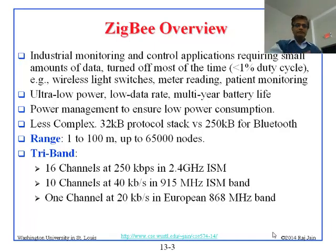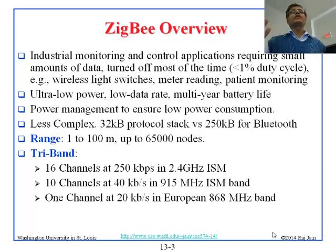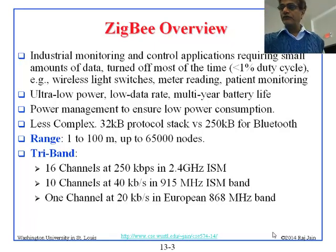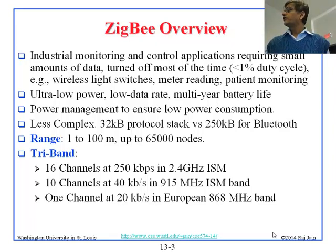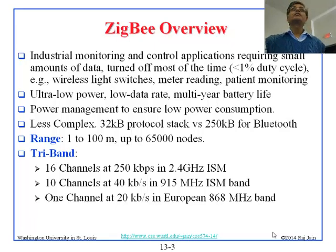Zigbee is tri-band, and since it uses 802.15.4, it runs everywhere 802.15.4 runs. 802.15.4 runs at 2.4 gigahertz, 915 megahertz, and 868 megahertz. Since those lower bands are smaller, the rate is smaller on those bands. Most devices run at 2.4 gigahertz.